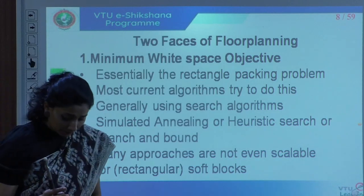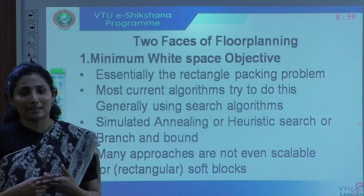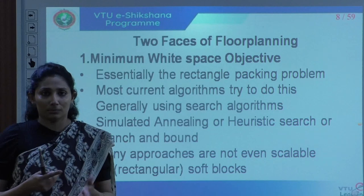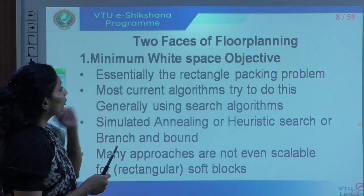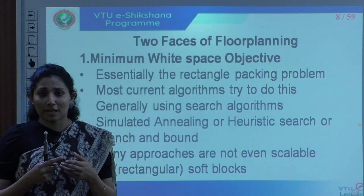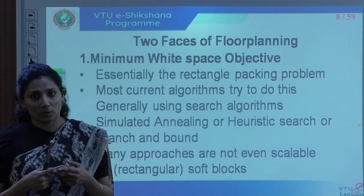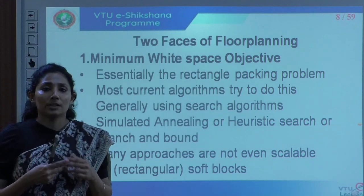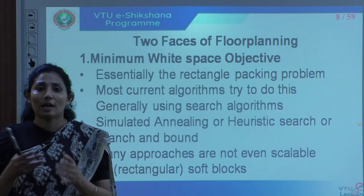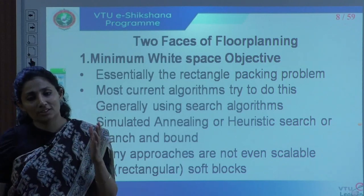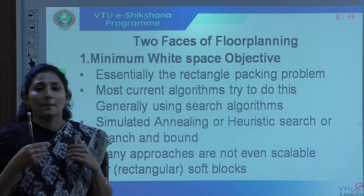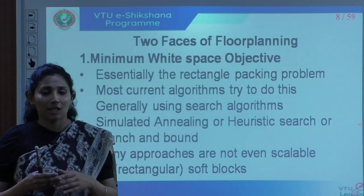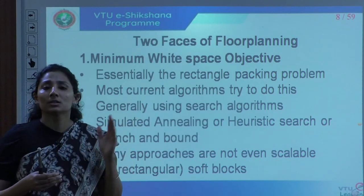There are two phases and objectives in floor planning: minimum white space objective — no vacant space should be left on the chip — and minimum wire length objective. There is a trade-off between them so that the design is optimized. We will look at the minimum wire length objective first, then come back to the white space objective.